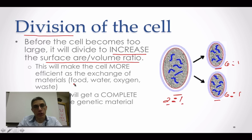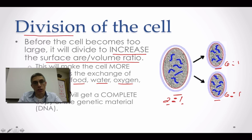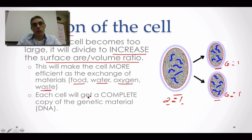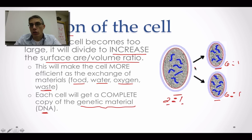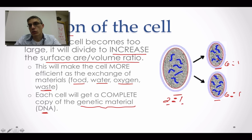We're talking about things like food, water, oxygen, and definitely the removal of waste from that cell. Each cell is also going to get a complete copy of the genetic material or DNA. When we had talked about DNA overload, we no longer have a situation where the DNA has to instruct all the different parts in a large cell. Now it's a lot easier to get that information to the different parts because the cell is so much smaller.